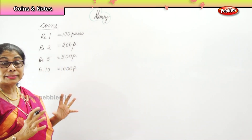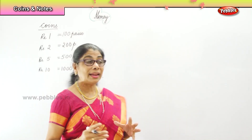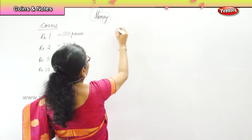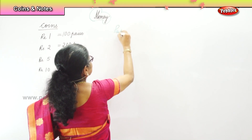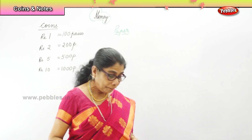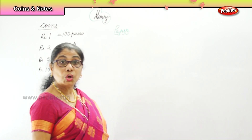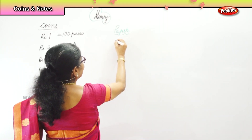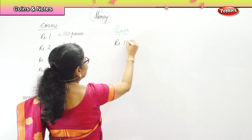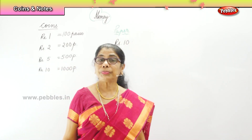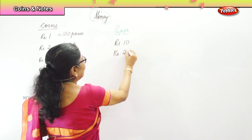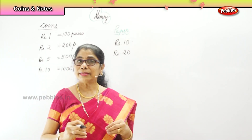That's all about the coins we have in Indian money. Now we have paper money. Let's look at the paper money. First of all in paper money we get rupees ten. Now we are talking about paper money, and we have rupees ten.